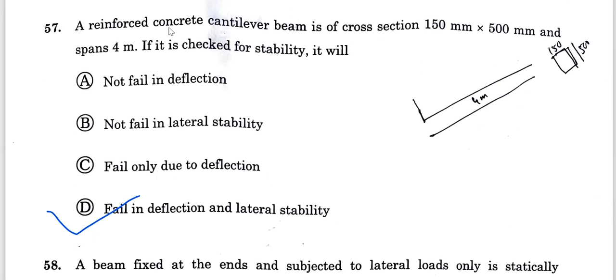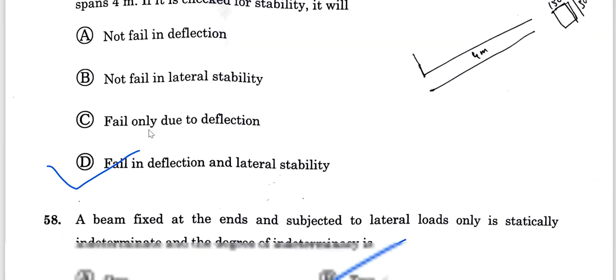Question 57: A rectangular cantilever beam of cross-section 150 mm into 500 mm and span of 4 meters. According to IS code provisions for deflection criteria and lateral stability criteria, you will ultimately find that this beam is failing in deflection as well as lateral stability.